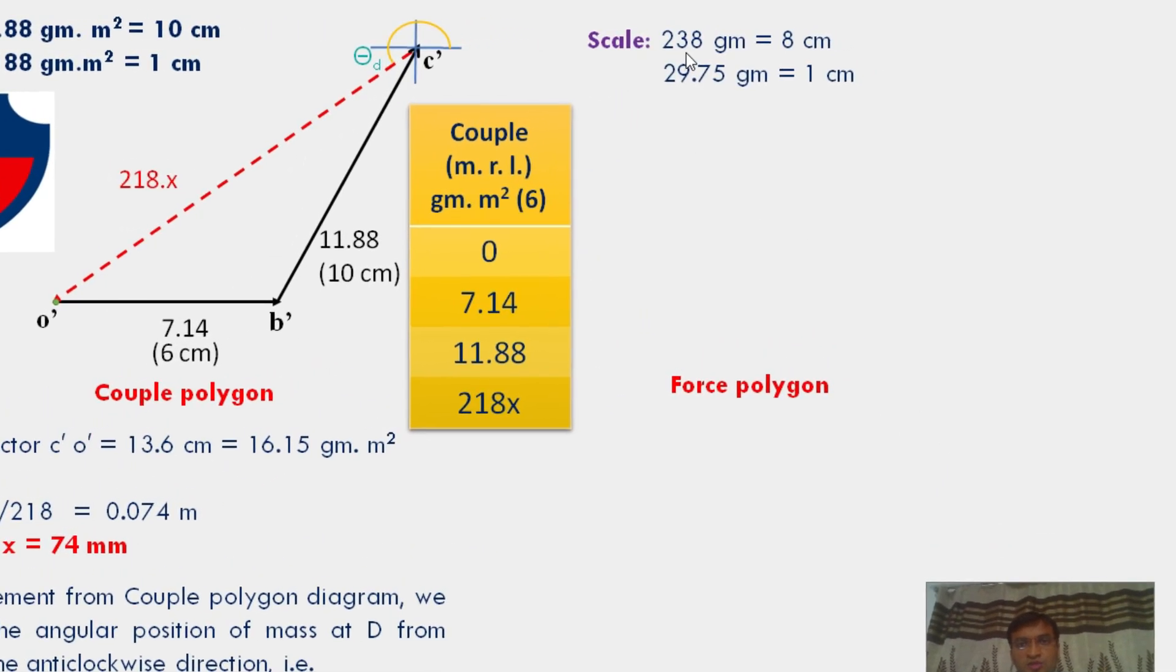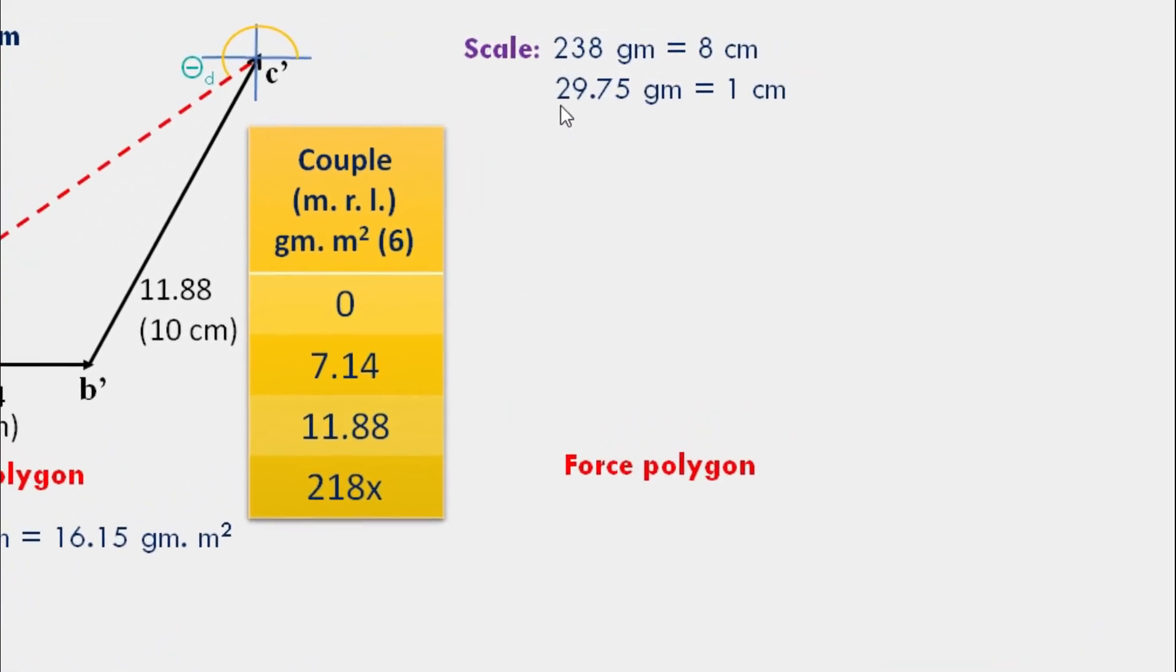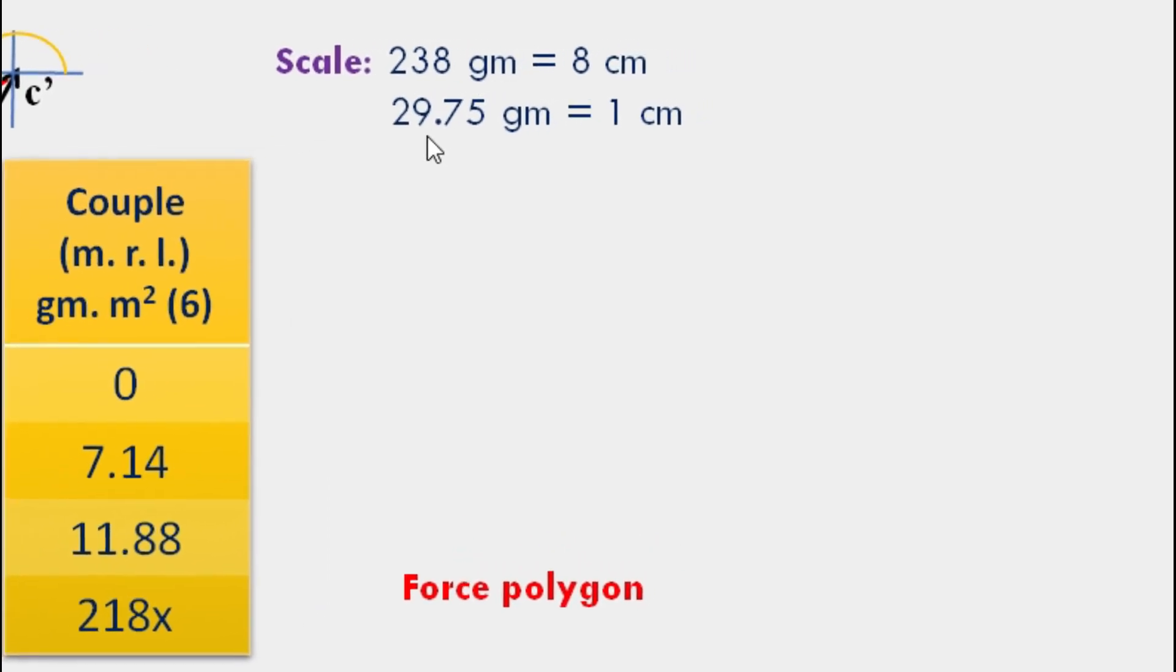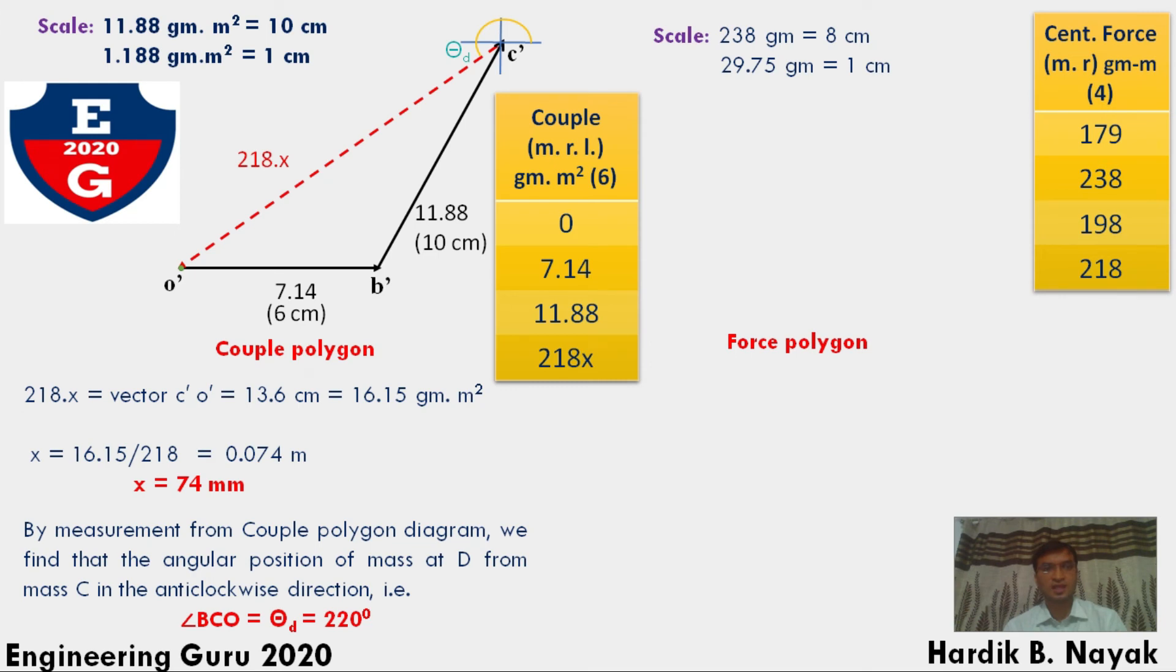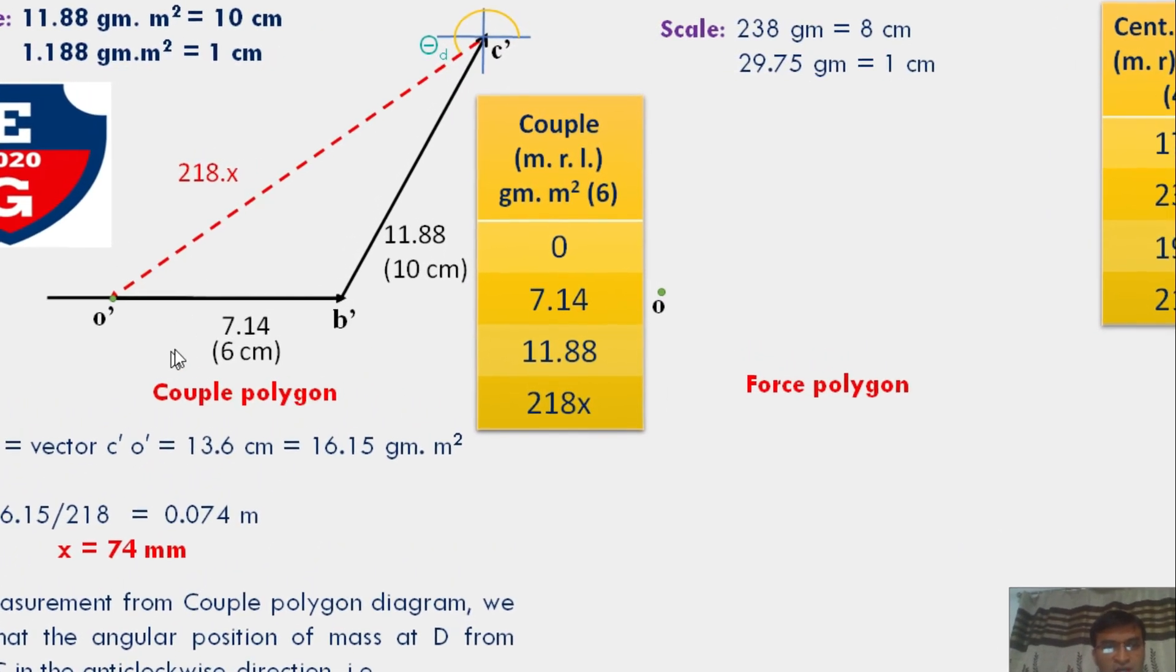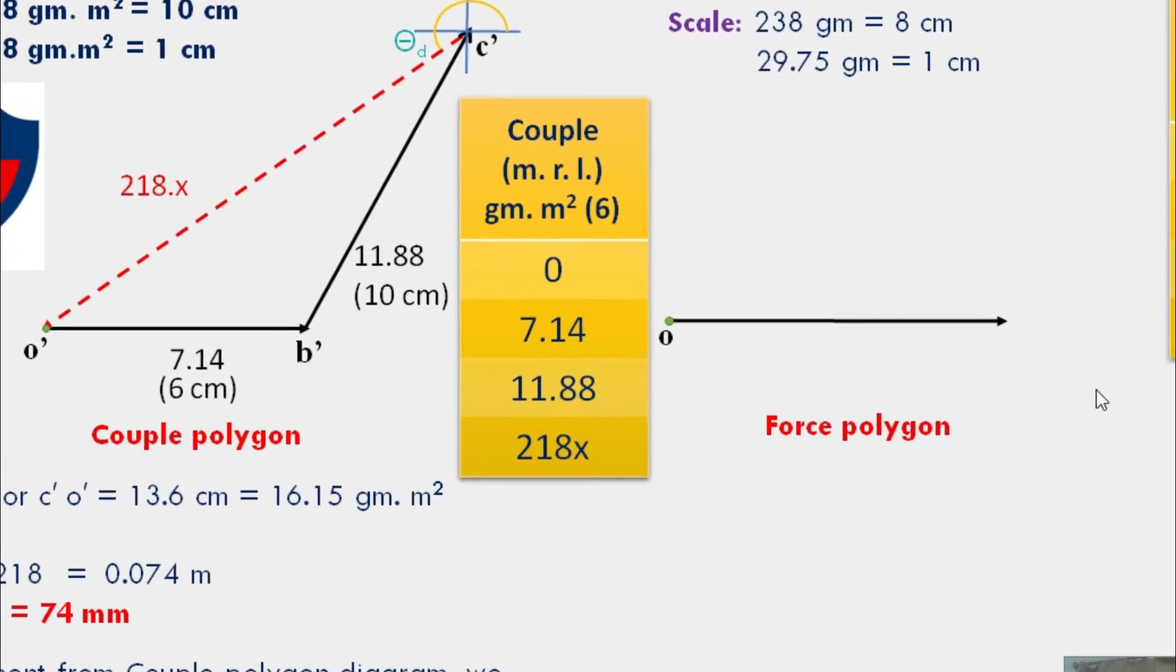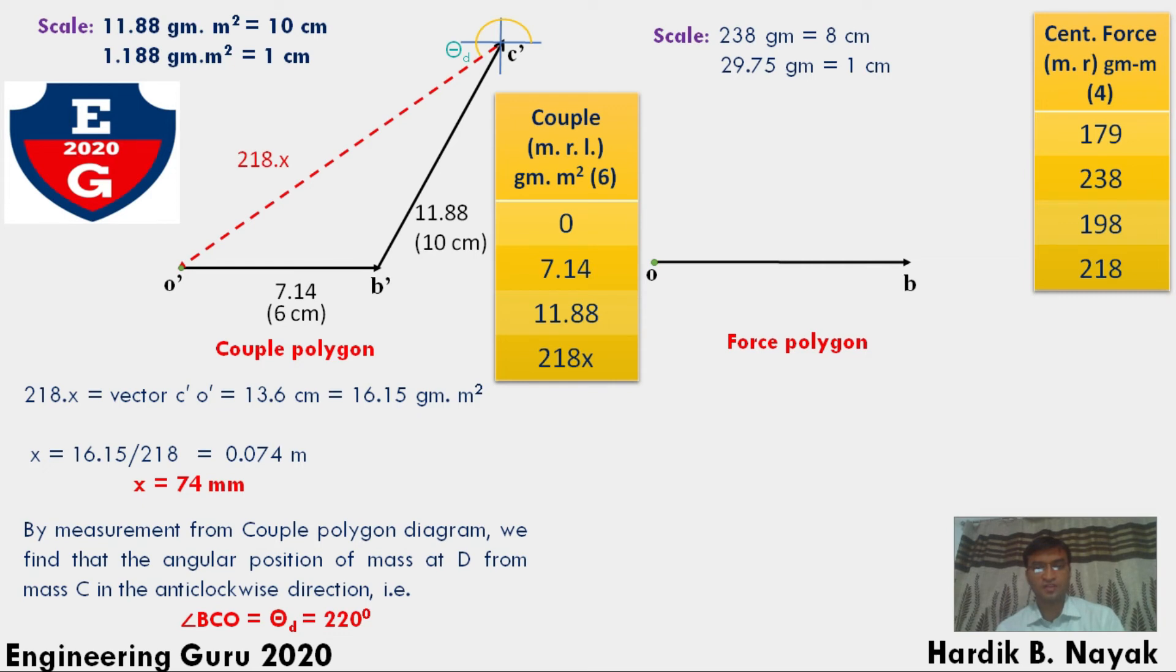Let's draw force polygon diagram. Assume scale 238 gram equals 8 centimeter, that means 1 centimeter equals 29.75 gram. Calculate all respective force vector values from scale. We draw force polygon by using column 4 values. First take random point O. Then draw force vector line OB. This line is drawn parallel from the couple polygon, and the length of this vector OB equals 8 centimeter, taken from scale.